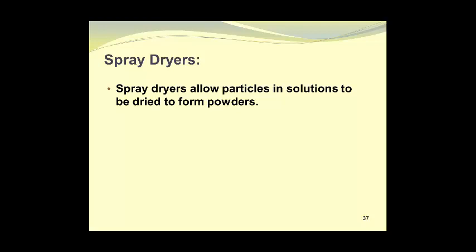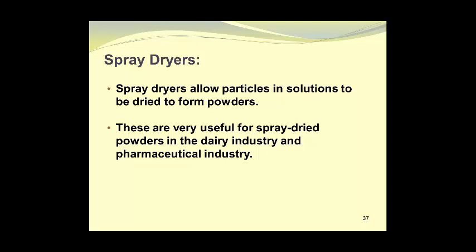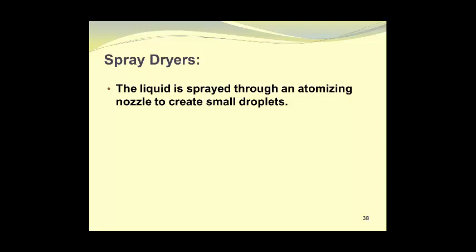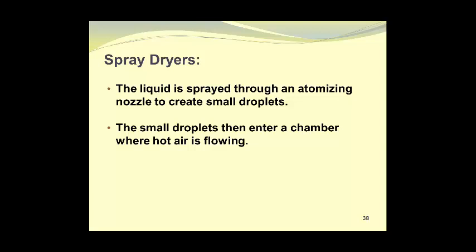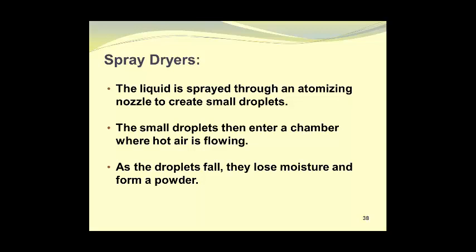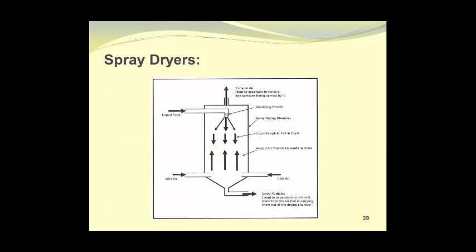Spray dryers allow particles in solution to be dried and to form powders. These are very useful for spray dried powders in the dairy industry as well as in the pharmaceutical industry. The liquid is sprayed through an atomizing nozzle to create small droplets. The small droplets then enter a chamber where hot air is flowing. As the droplets fall, they lose moisture and form a powder, which is then collected. Here is a schematic diagram of a spray dryer. The liquid feed enters from the top left, goes through an atomizing nozzle, and the spray travels downwards as liquid droplets falling in the dryer. The heated air traveling upwards removes the moisture and the particles fall to the bottom. They are a real workhorse in the pharmaceutical and dairy industry.